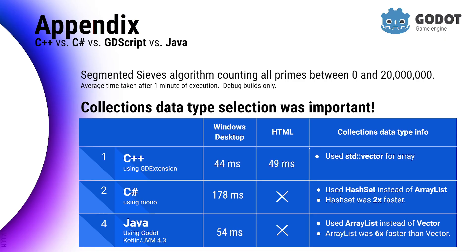Now for some caveats. The collections and data types selected to implement the algorithm are very important. Looking at the GeeksforGeeks versions across different languages, they didn't always choose the best collection classes for performance. You have to be careful with what you see on Stack Overflow and similar sites — the algorithm logic may be sound, but the data type choice may not be. For C++, they used std::vector with long long integers, which is the standard library choice and I didn't modify it.